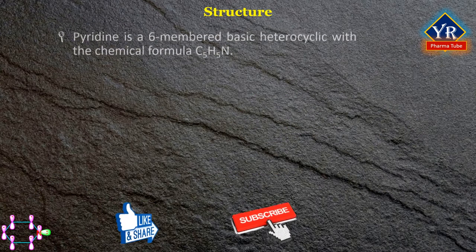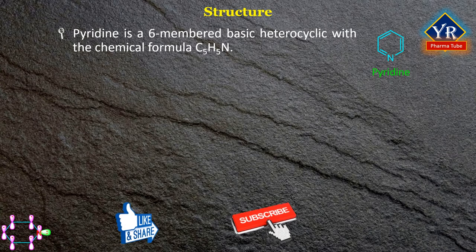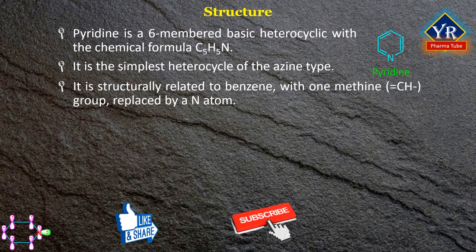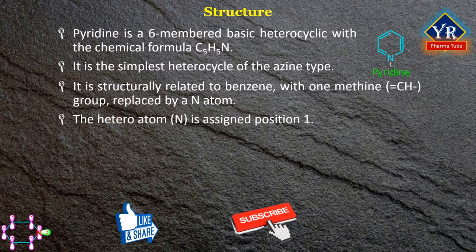Structure of pyridine. Pyridine is a six-membered basic heterocyclic organic compound with the chemical formula C5H5N. It is the simplest heterocycle of the azine type and is also known as azabenzene, as the structure possesses a nitrogen atom. It is structurally related to benzene with one methane group replaced by a nitrogen atom. In other words, pyridine is derived from benzene by the replacement of a CH group by a nitrogen atom. The numbering system starts at the heteroatom — that is nitrogen — as it is assigned position 1, and the numbering passes around the ring in a manner so as to give the substituents the lowest possible numbers.